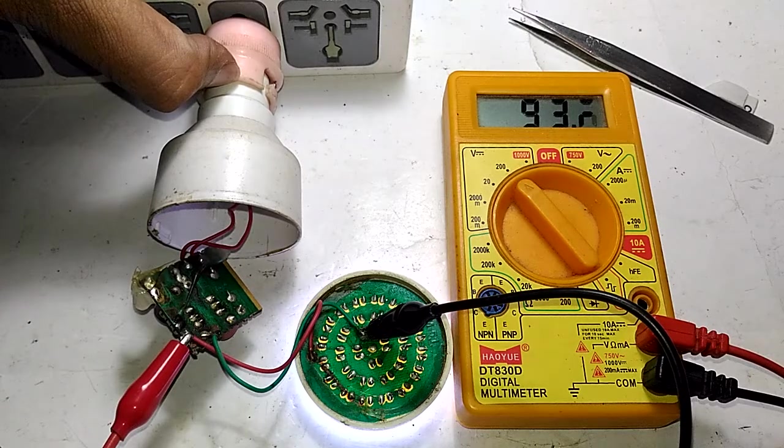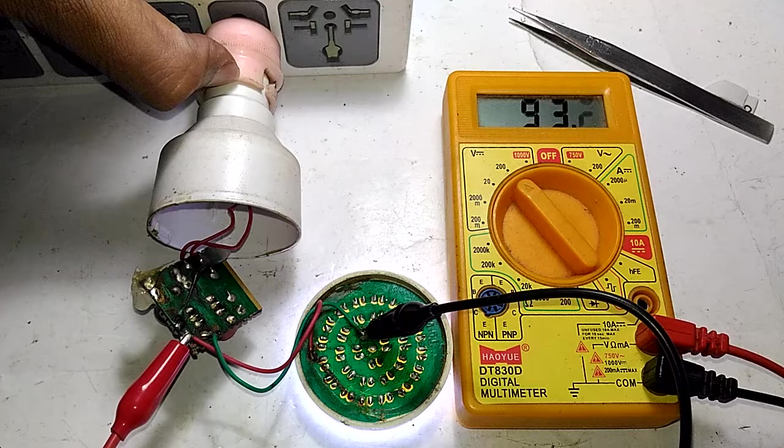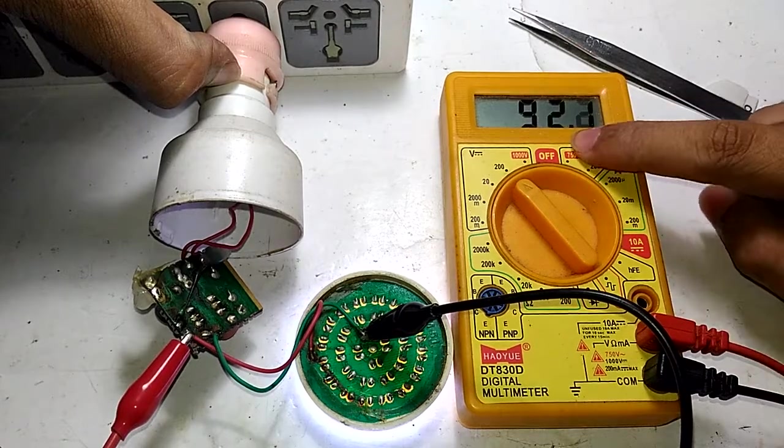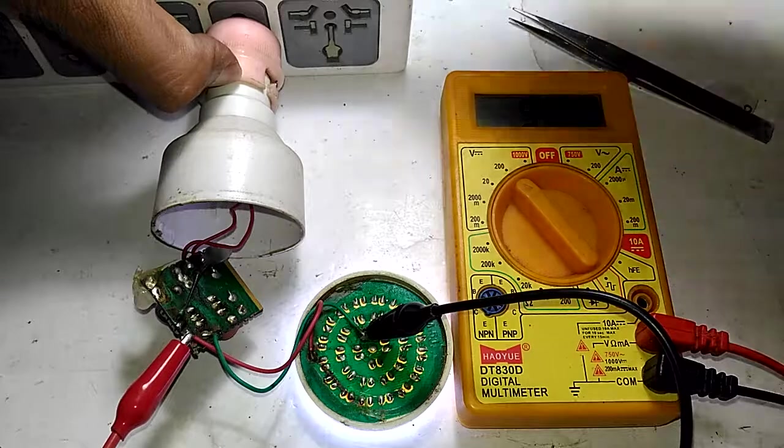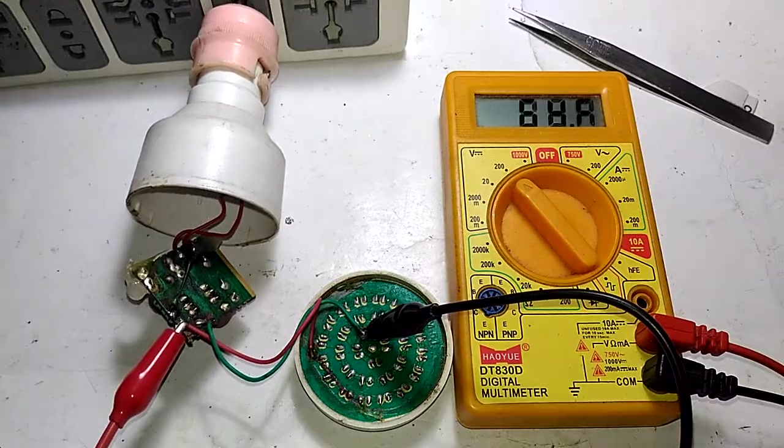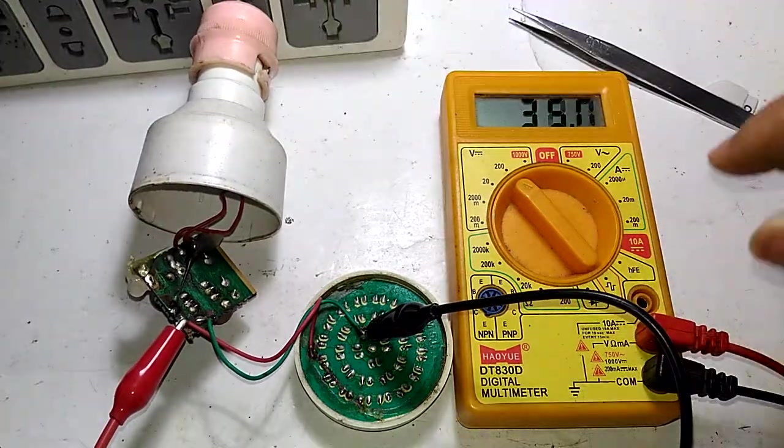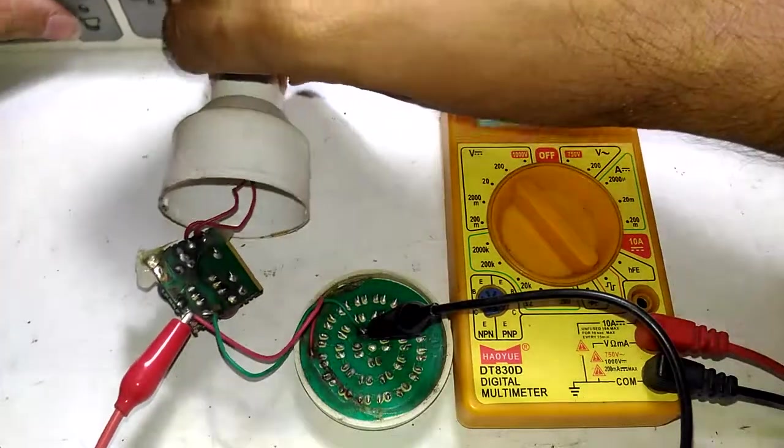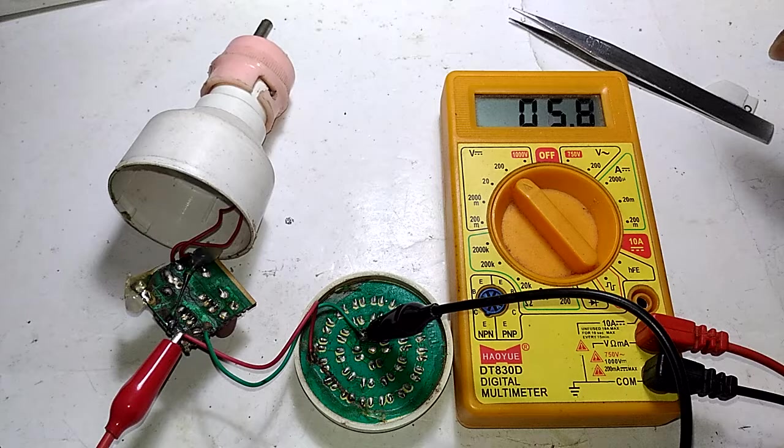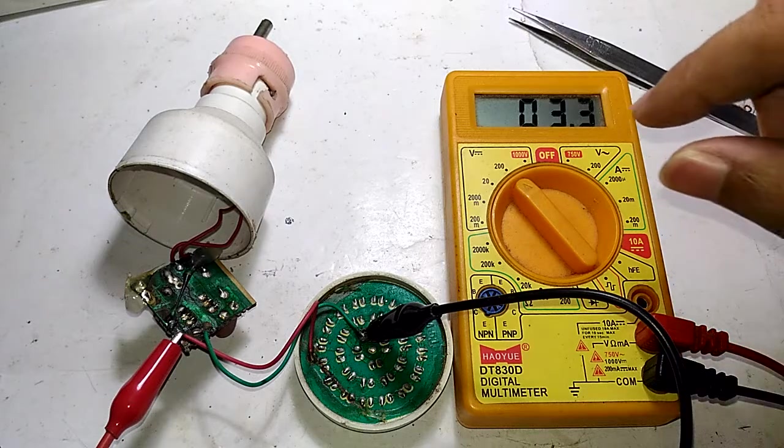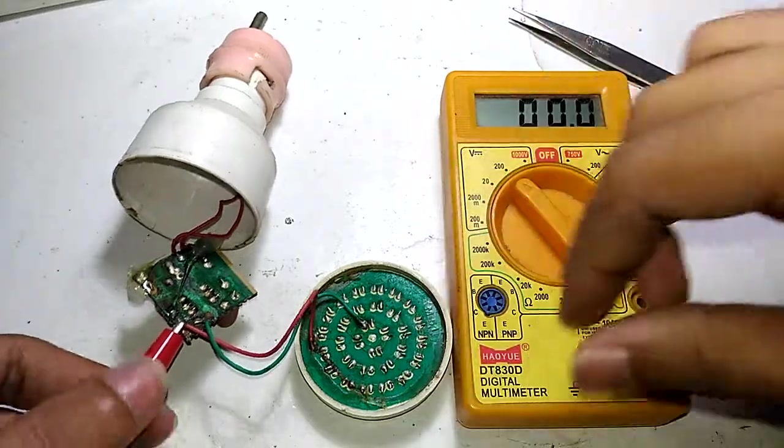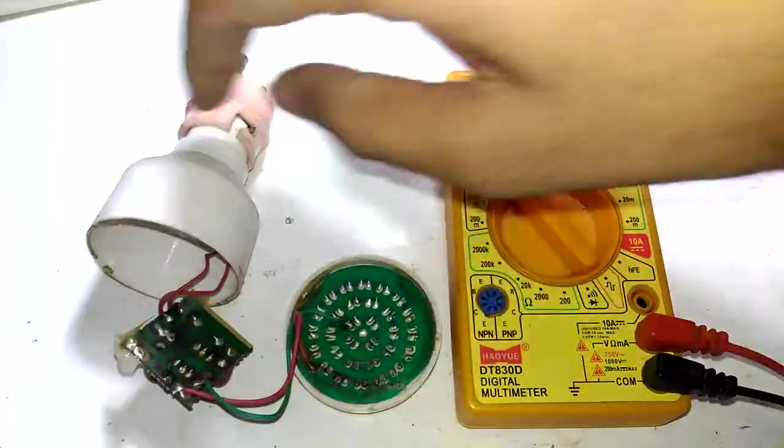I have now connected my multimeter across the LED bulbs. Let's turn on and see how much voltage is across the LEDs. That is as expected around 93 volts - 92.9 volts. So the rest of the volts will be dropped across the capacitor.